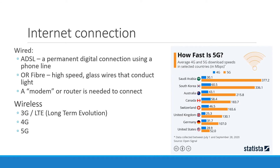Your internet connection can be wired or wireless. On the wired side, we have ADSL, which is a permanent digital connection using a telephone line — but it is being used less and fiber is taking over. Fiber is high speed; it uses glass wires that conduct light. For either, you will need a modem or a router to connect.